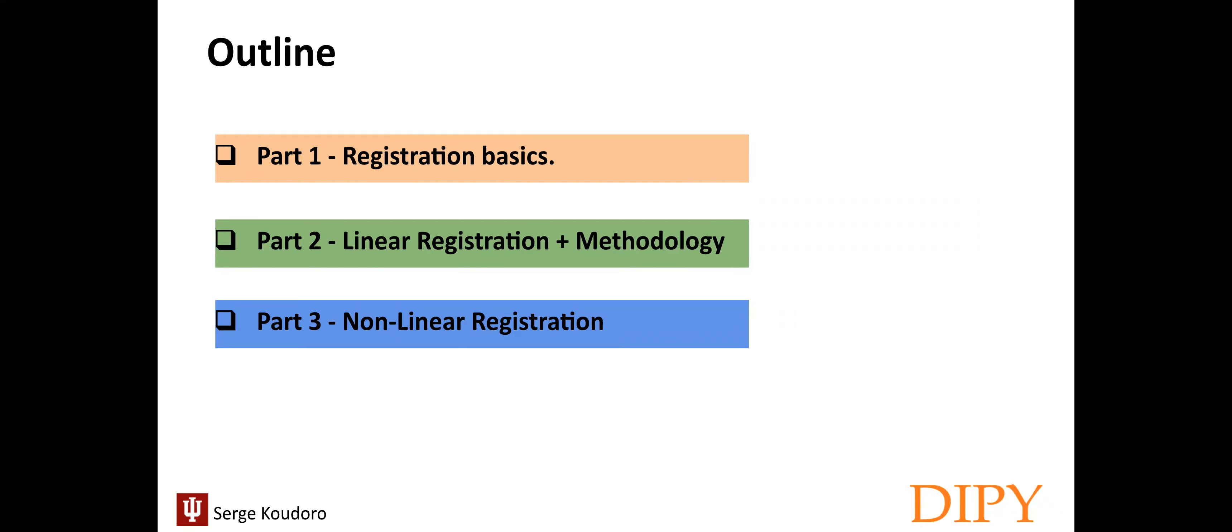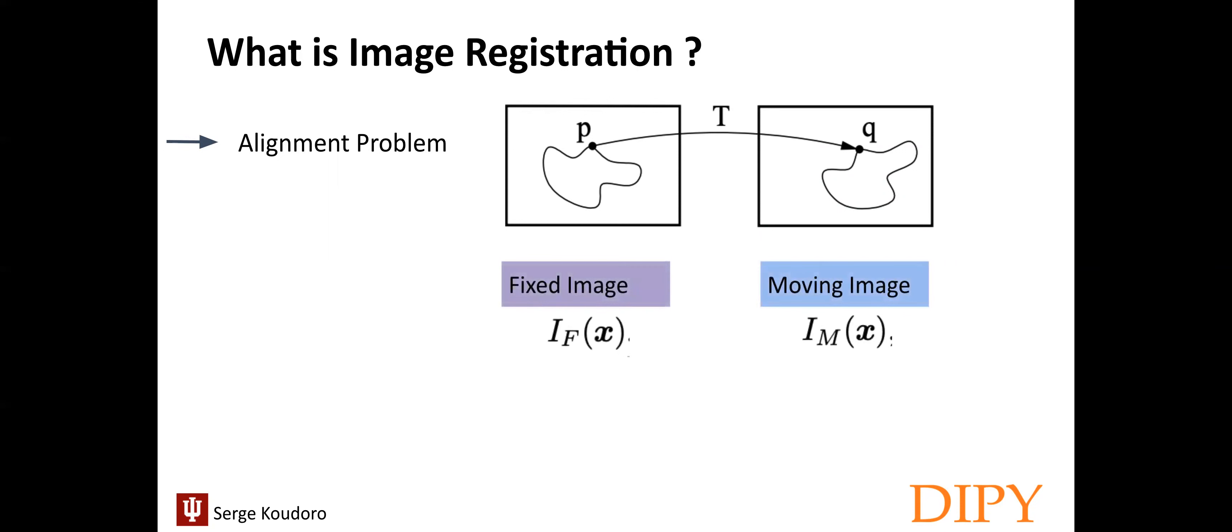So what is image registration in medical imaging? Image registration is just an alignment problem. In this simple example, we have one moving image that we will call I_M(x) that will be deformed to fit the other image, the fixed image that we will call I_F(x). To do that, we need to find a displacement that we will call D(x) that makes I_M(x + D(x)) spatially aligned to I_F(x).